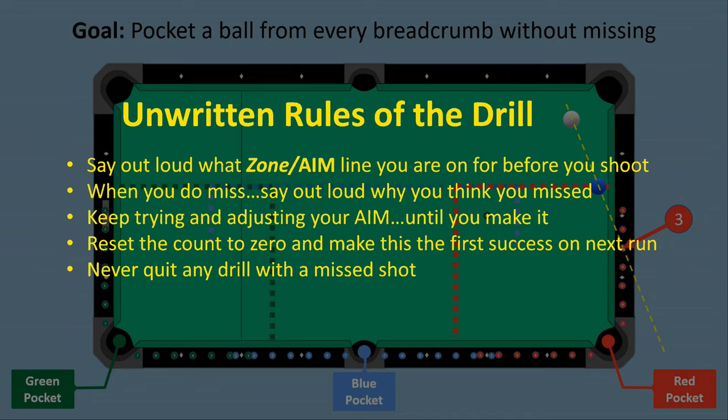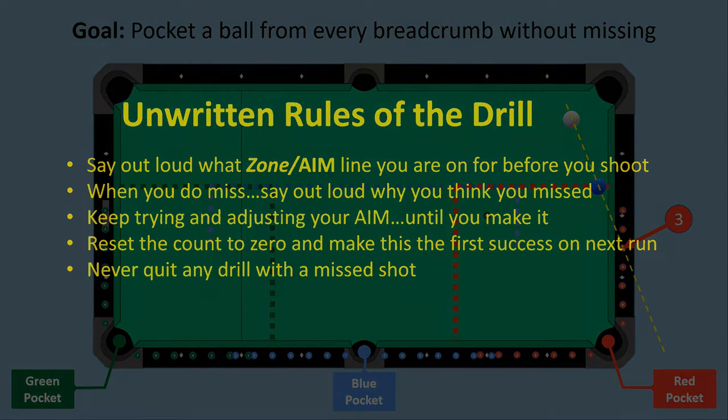In the event you miss a shot, it's important you immediately guess why you missed the shot, and try it again after making the adjustments you think are needed to make it. After missing, you need to reset the drill count to zero, and start a new run from that spot. But at the end of the day, if you can make all 48 shots in a row without missing, you will have a good feel for what the 25 yard line looks like inside of your head.